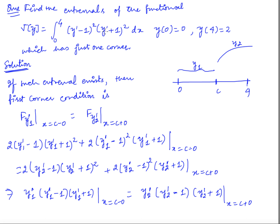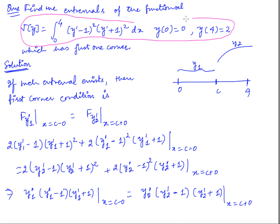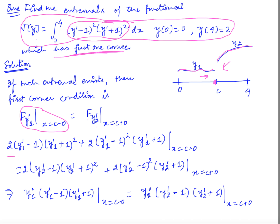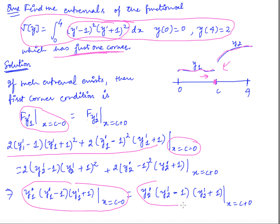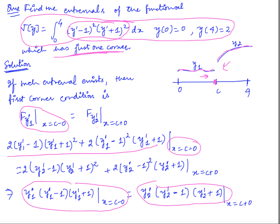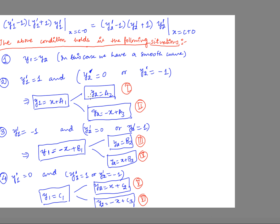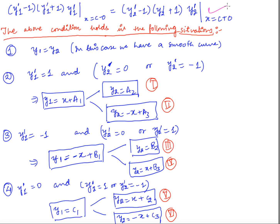The next example asks us to find the broken extremal of a functional with exactly one corner. The interval is from 0 to 4. Suppose c is the corner, with solution y1 on the left and y2 on the right. Applying the first Weierstrass condition f_{y1'} = f_{y2'} and using the given f, after manipulation we get a condition relating y1' and y2'.